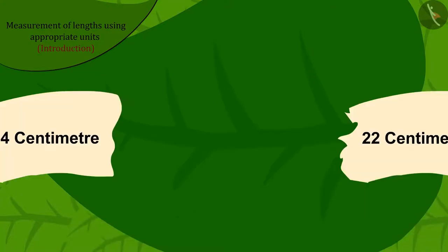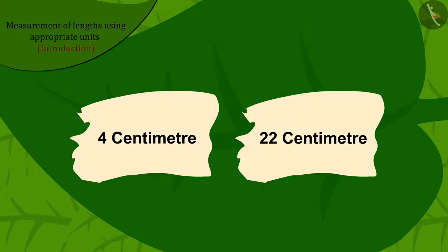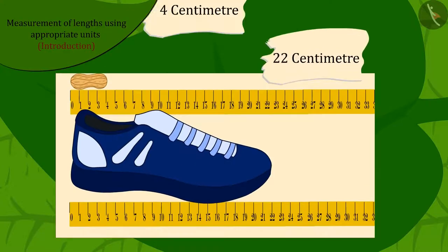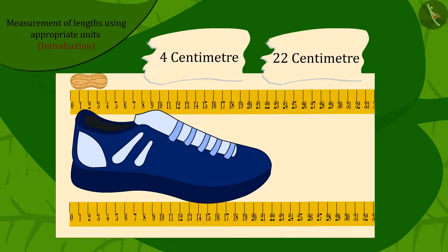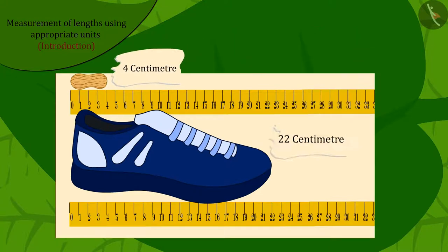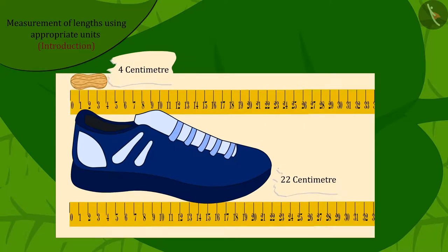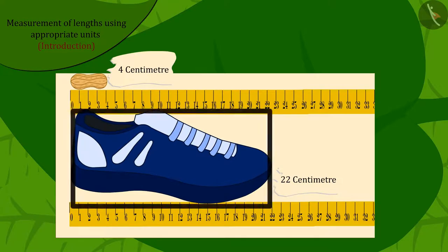Now, Chanda found these two pieces of paper on which 4 cm and 22 cm were written. Can you match the length of the remaining two objects with their correct lengths? You can find the answer by pausing the video. Well done, kids! You have found the answers! Because the length of the peanut is much smaller than that of the shoe, length of peanut will be 4 cm and shoe length will be 22 cm.